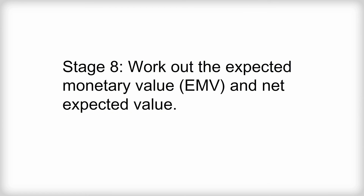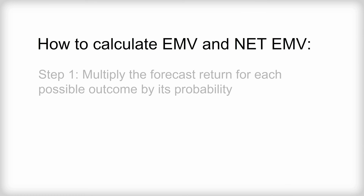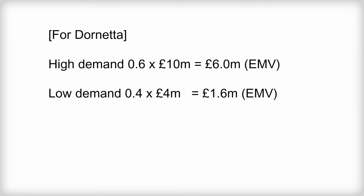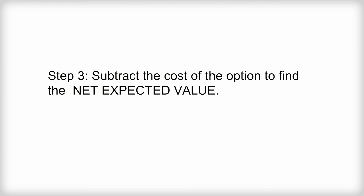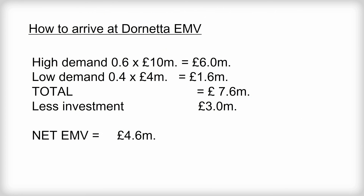Stage eight: work out the Expected Monetary Value (EMV). Start on the right. Step one: multiply the forecast return for each possible outcome by its probability. Step two: add the results of these various forecast returns together. Step three: subtract the cost of that option. That final answer provides a figure representing the net expected value of a particular option. Here are the figures showing how the EMV would be worked out for each brand of ice cream.